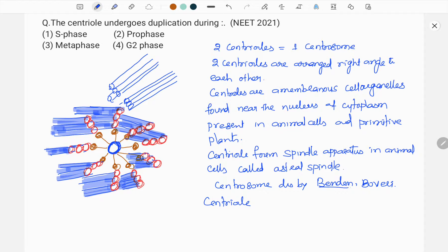Centrosome is discovered by Benden and Bavari. And the centrosome duplication takes place during S phase. That too in cytoplasm. We know that during the S phase, DNA replication takes place in nucleus. At the same time in animal cells in cytoplasm, centriole duplication takes place.